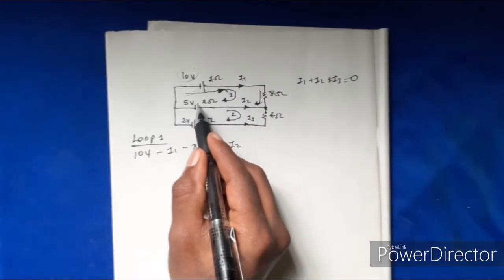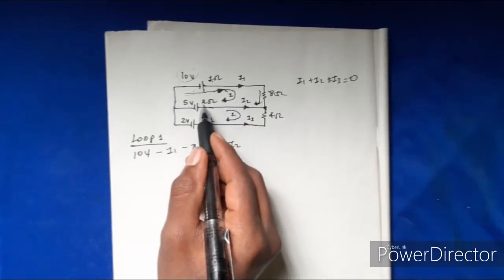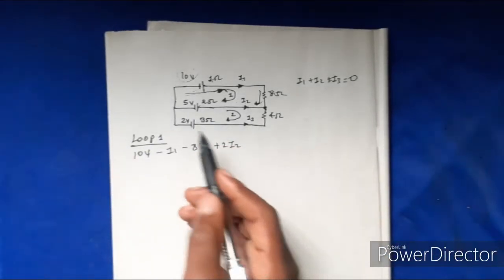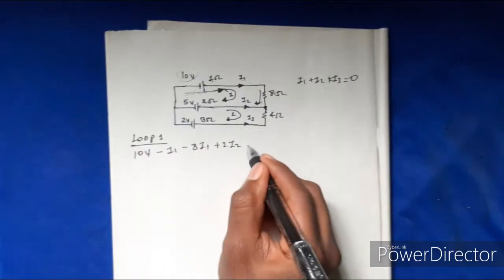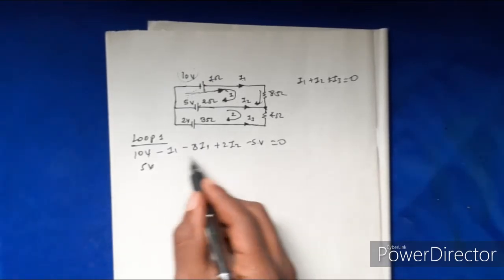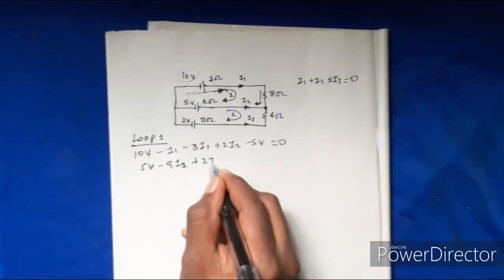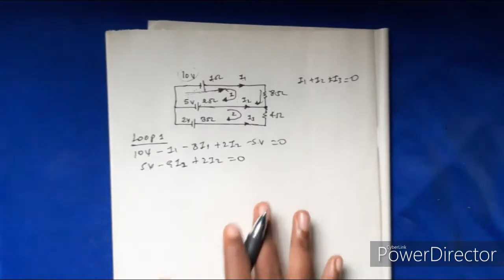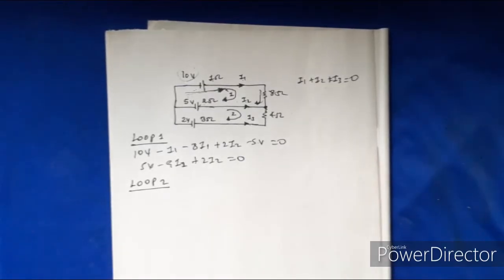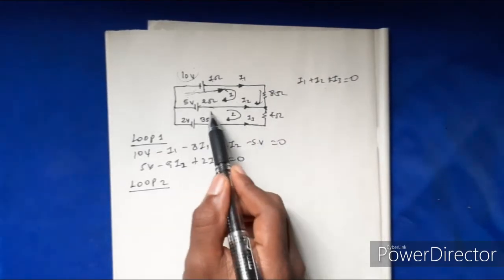Now the voltage will give you the direction. When it is negative-positive, we have a positive and then a negative result. If we have a negative high potential, that results in negative 2 volts, then negative 5 volts, giving us: minus 9I1 plus 2I2 equals 0. We can see loop 1 and loop 2 summarized together.